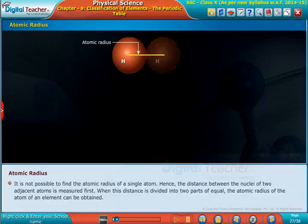It is not possible to find the atomic radius of a single atom. Hence, the distance between the nuclei of two adjacent atoms is measured first. When this distance is divided into two equal parts, the atomic radius of the atom of an element can be obtained.